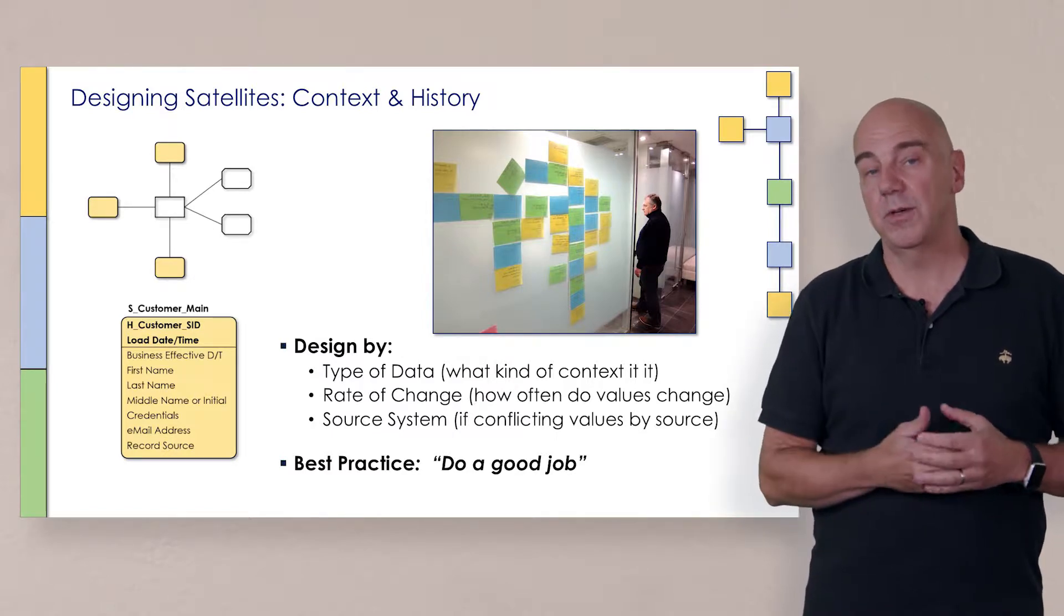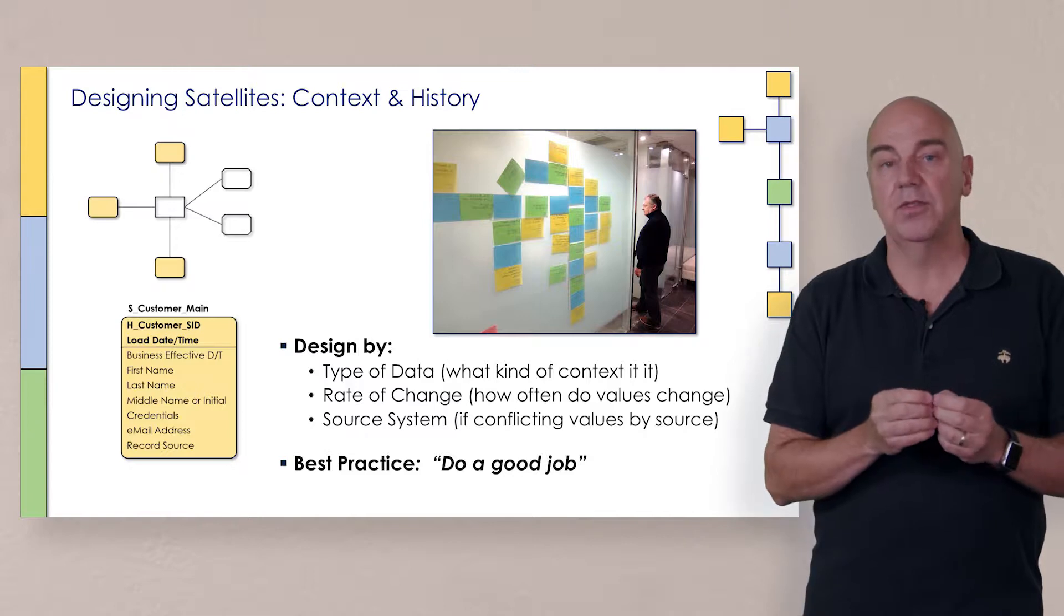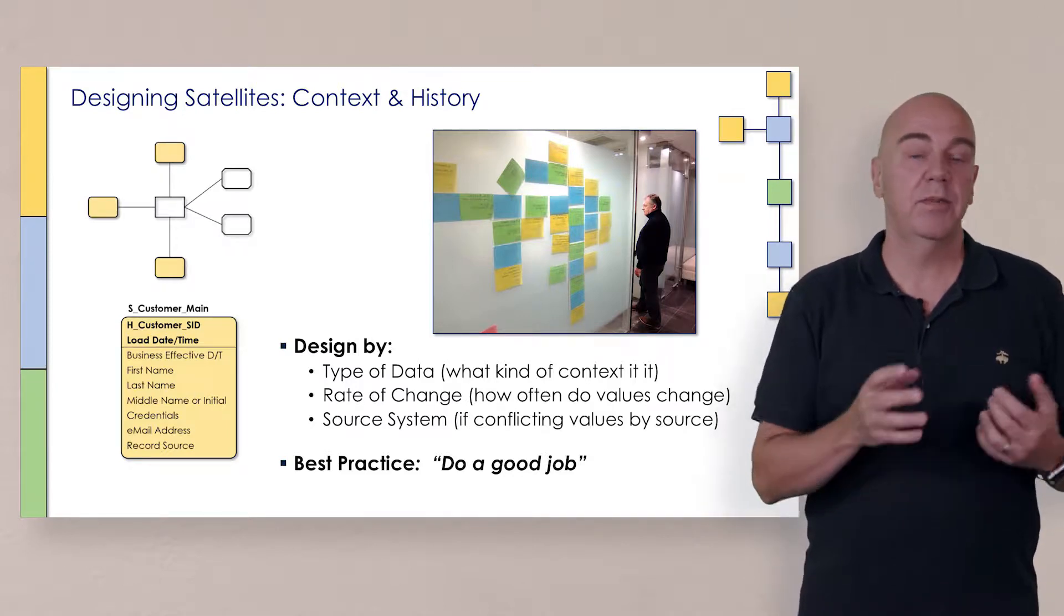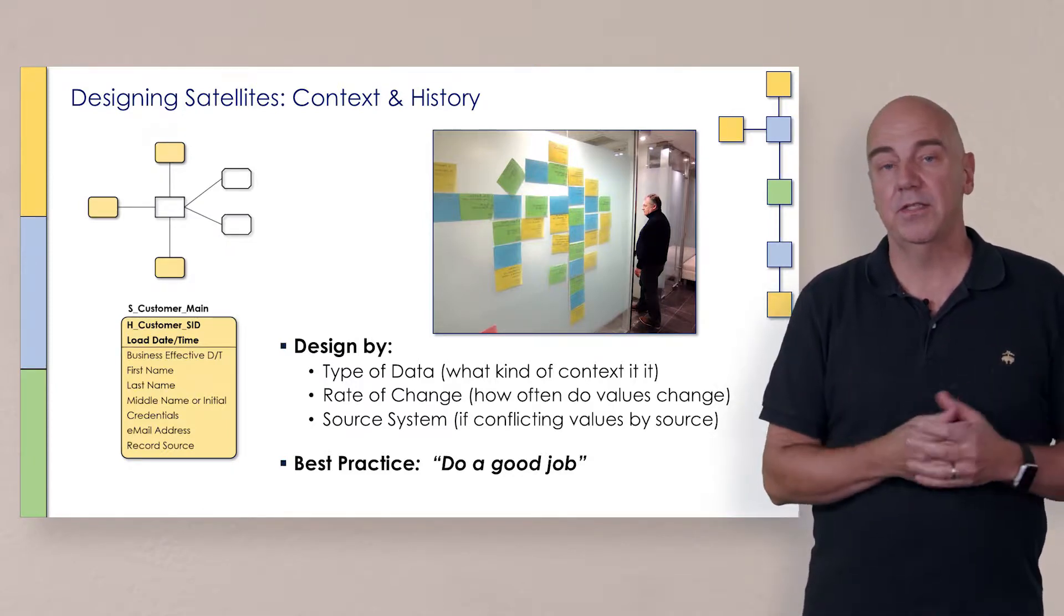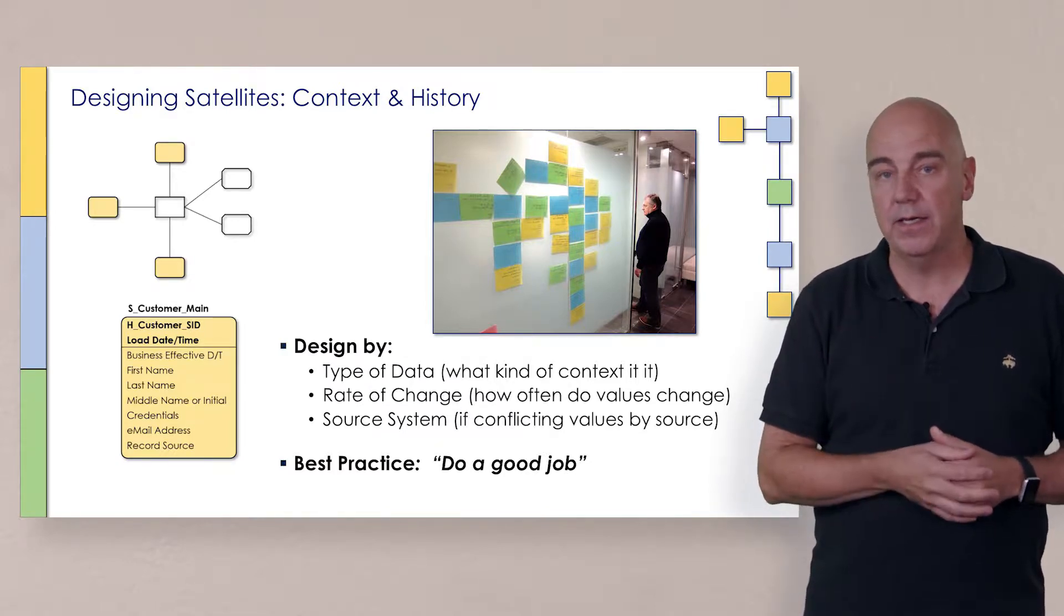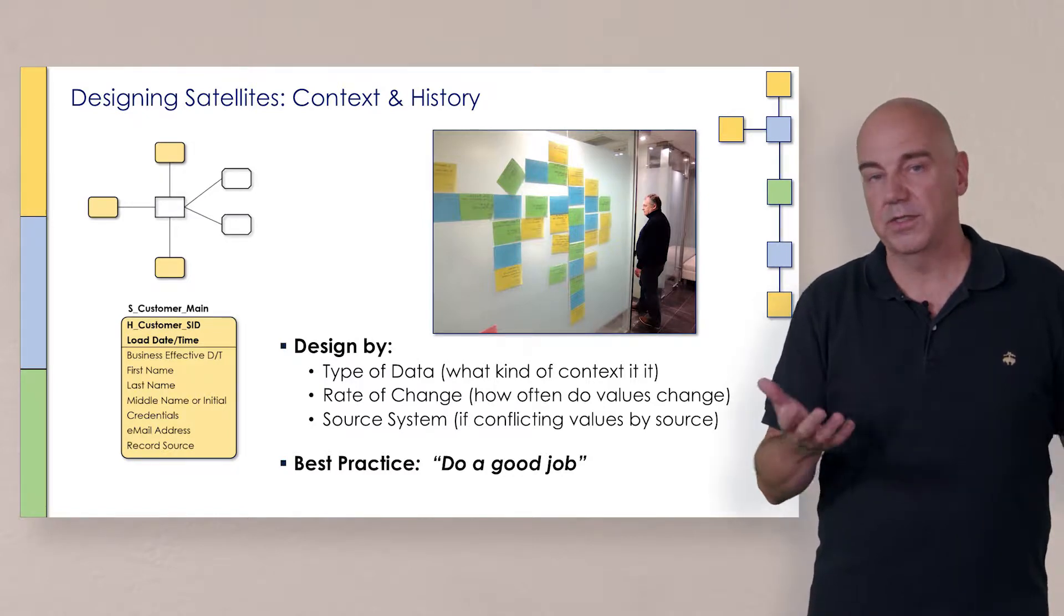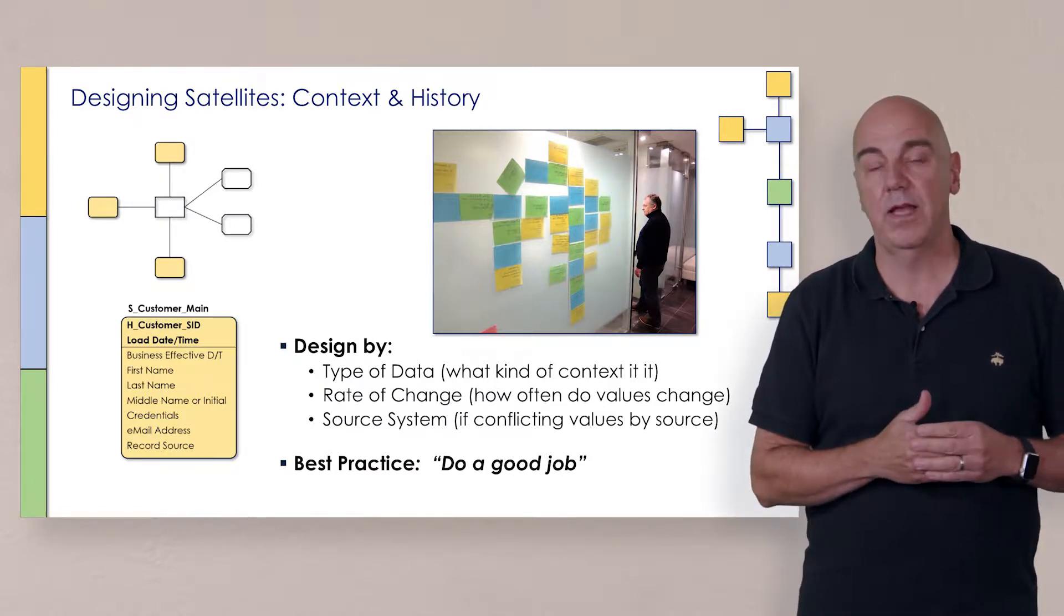Also, we consider the rate of change. So for example, if there's certain attributes that change all the time, and some that barely change at all, we tend to separate those out. Like customer rating, which could change every week. We don't want to put that into like their name, which changes once every never, right? It doesn't really happen very often.